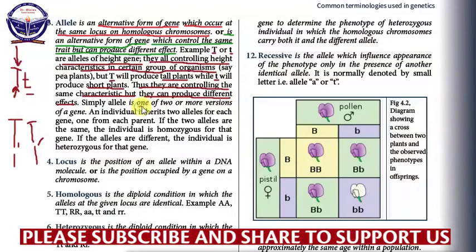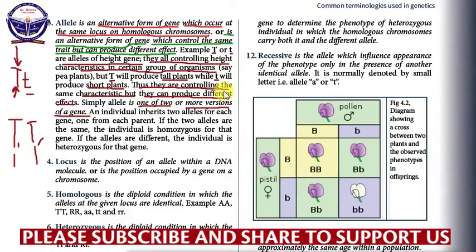An allele is one of the two or more versions of a gene. A gene usually has two or more versions, and those versions are what we call alleles. Maybe one is dominant — we call it a dominant allele — and one is recessive — we call it a recessive allele. An individual inherits two alleles for each gene, one from each parent. If two alleles are the same, the individual is homozygous for that gene. If the alleles are different, the individual is heterozygous for that gene.